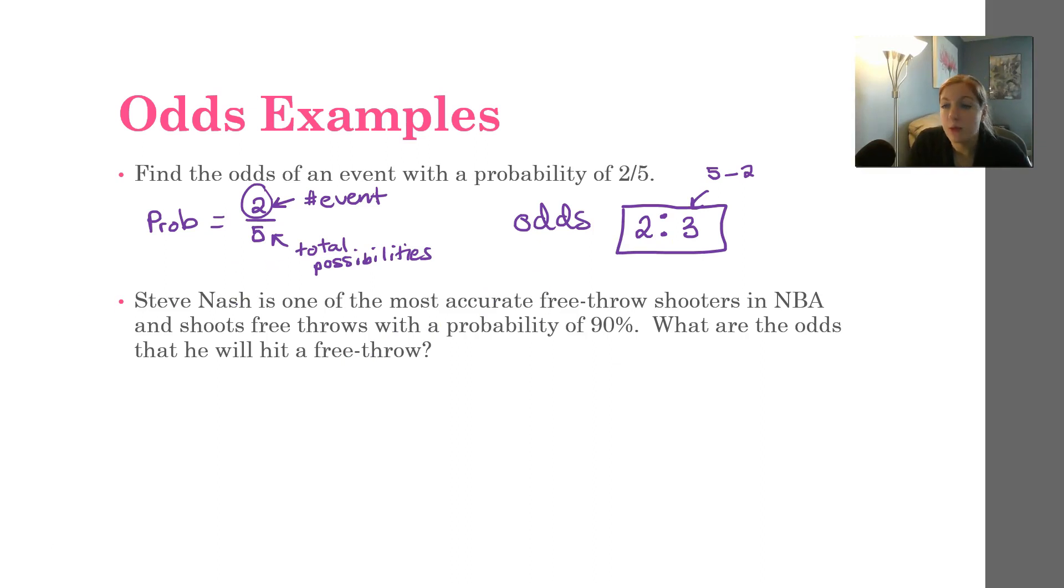Now the last one we want as an example is going to be Steve Nash is one of the most accurate free throw shooters in NBA and shoots free throws with a probability of 90%. Woo, pretty high. I really don't know that much about basketball. Big surprise. But there is a stat for you. 90%. What are the odds? Paying attention and reading carefully, right? What are the odds that he will hit a free throw?